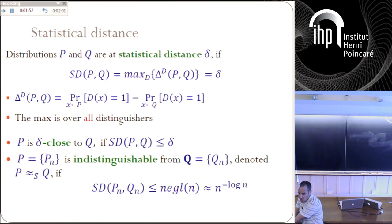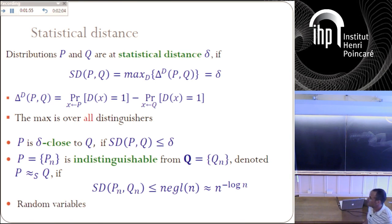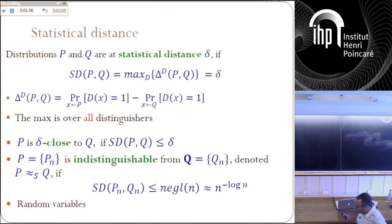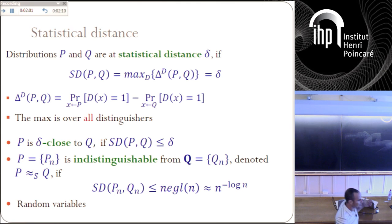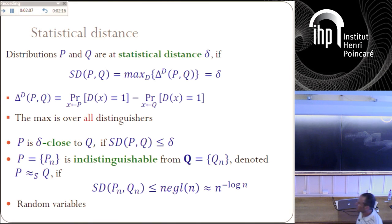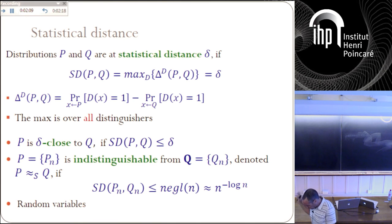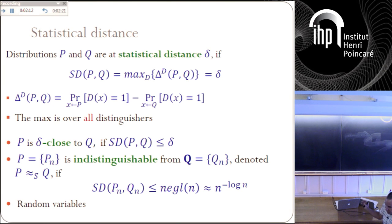I'm also going to use statistical distance between random variables, where I mainly mean that I'm taking the statistical distance between the distributions of those random variables. So, I've finished my overview of information-theoretic notions. Let me just say two facts.